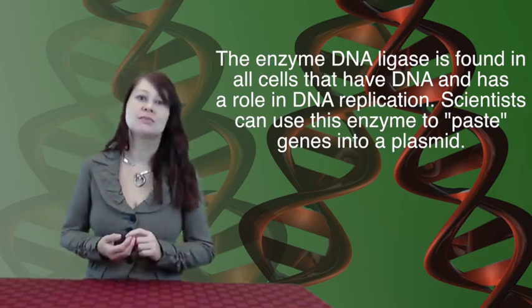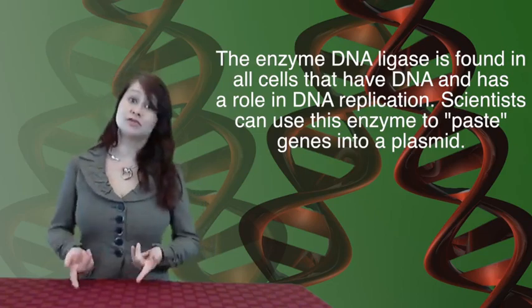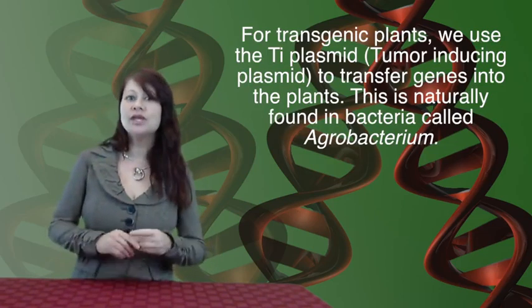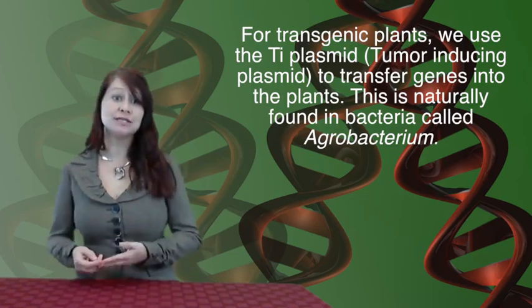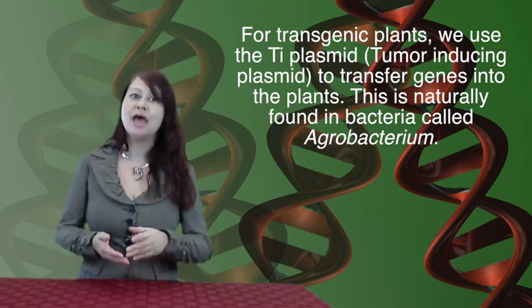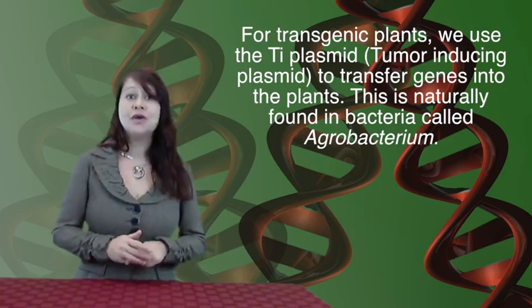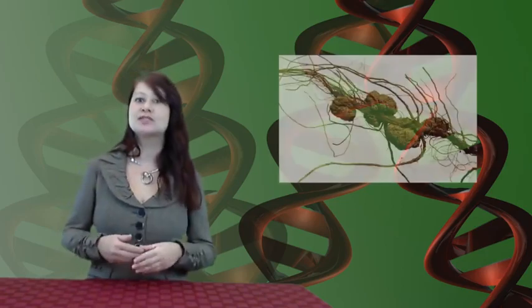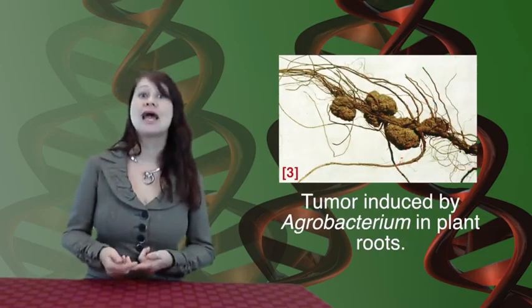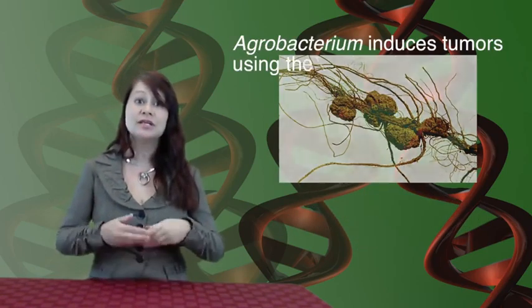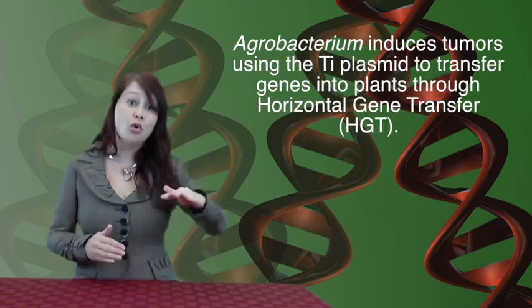In addition to creating transgenic bacteria, we can also create a wide range of transgenic plants using something called the Ti plasmid. Ti stands for tumor-inducing. We can create transgenic plants by transferring genes into plants using that Ti plasmid, which is found in nature in a bacteria called Agrobacterium. In nature, this bacterium infects plants and induces a tumor to form, allowing the bacteria to proliferate. The bacteria does this by using the genes on the Ti plasmid to undergo a process called horizontal gene transfer.